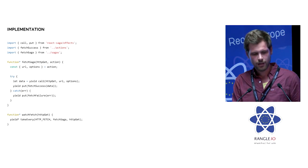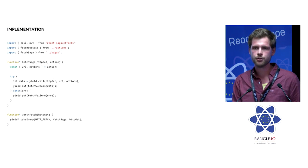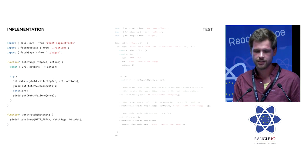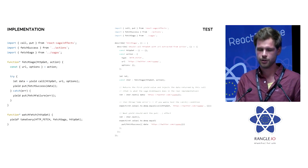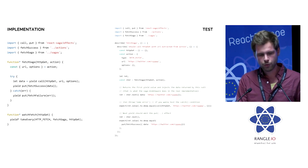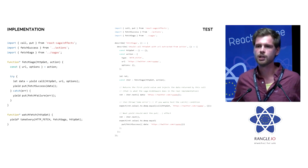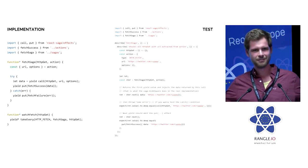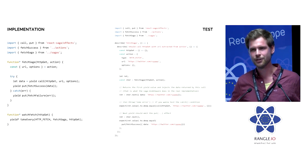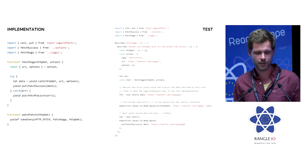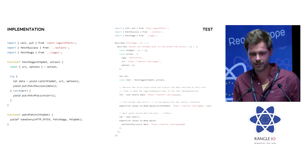I told you sagas are super easy to test, and the nice thing is we can test them completely synchronously. What we do is we pretend to be the middleware — just think of yourself as a middleware in a Redux store, minding your business, and then suddenly someone yields a generator.